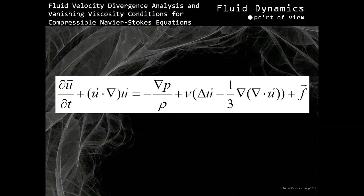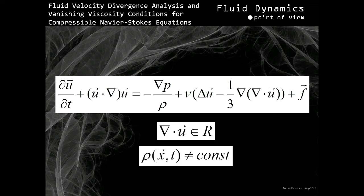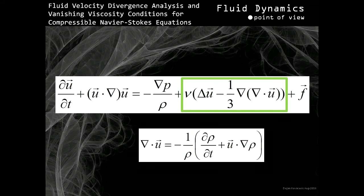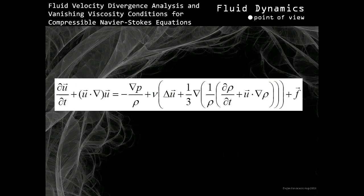Now let's continue. This is the Navier-Stokes equation for compressible fluids. In the case of Navier-Stokes equations for compressible fluids, velocity vector field divergence can have both positive and negative values. Also, fluid density can be variable over space as well as over time. The Navier-Stokes equation for compressible fluids has a viscosity-related term which includes a statement for fluid velocity vector field divergence. Now let's replace velocity divergence in the viscosity-related term with velocity divergence expressed as a function of fluid density and fluid velocity. The resulting equation represents the Navier-Stokes equation for compressible fluids with the viscosity-related term in function of fluid density and fluid velocity.